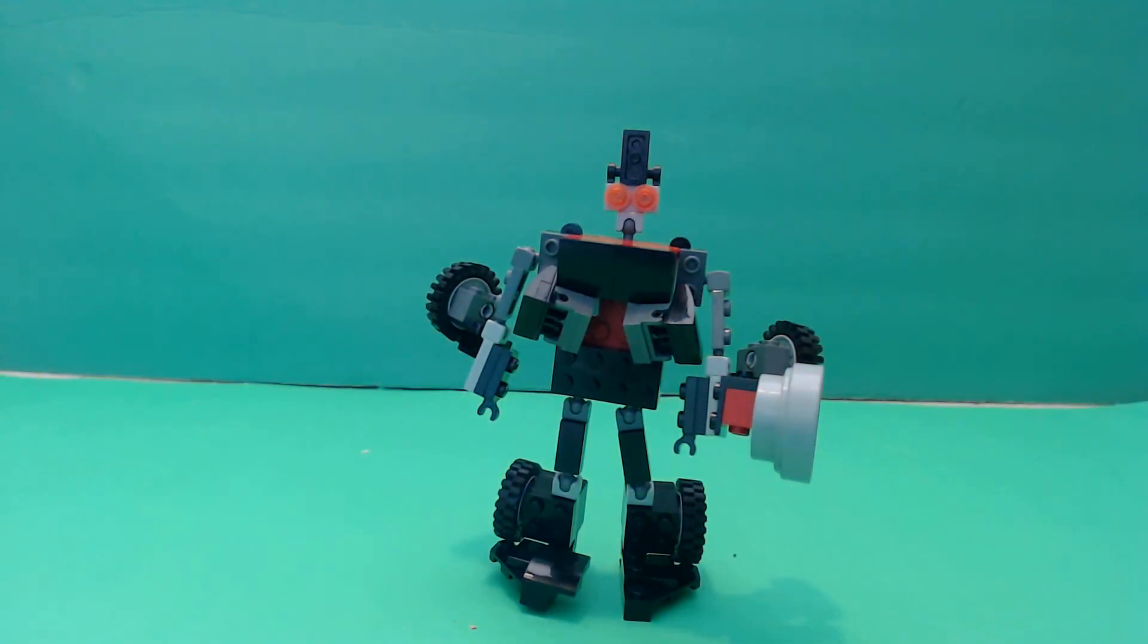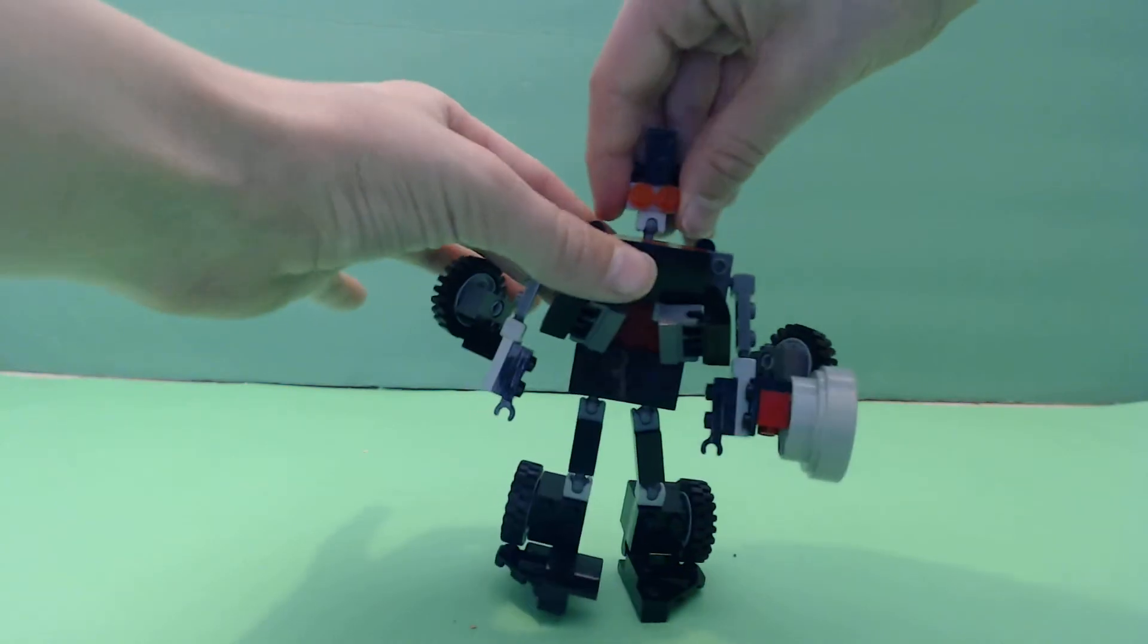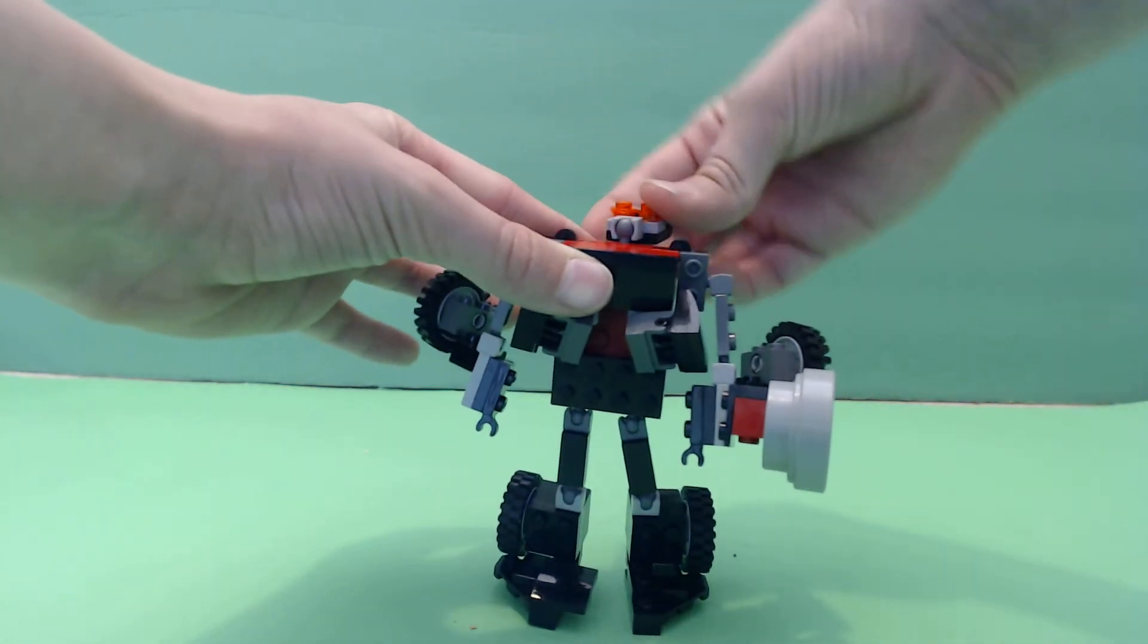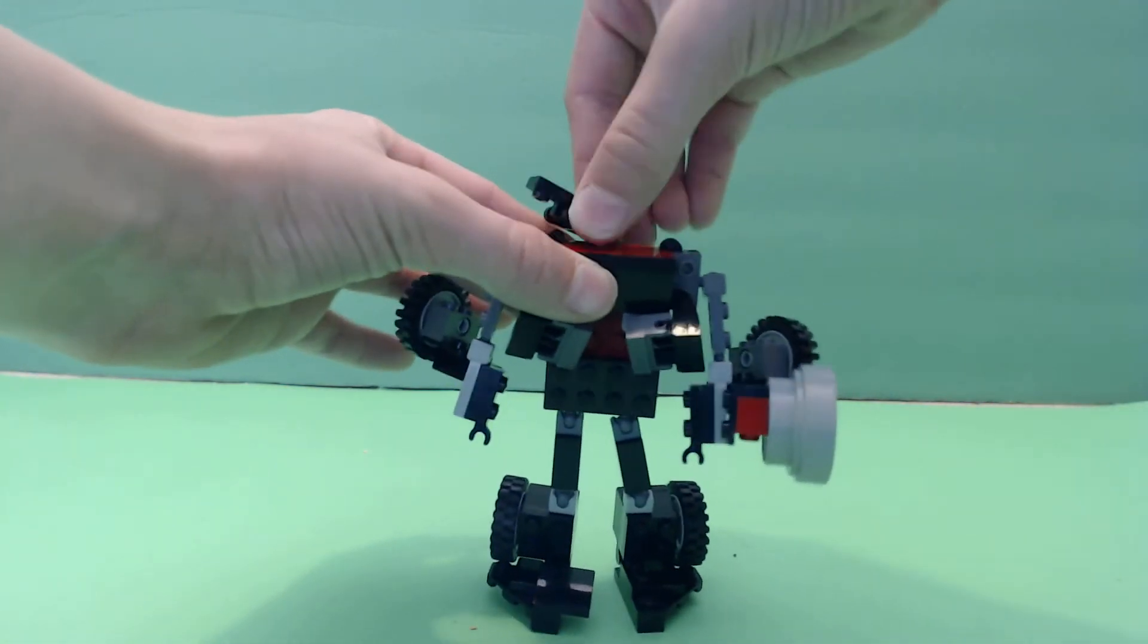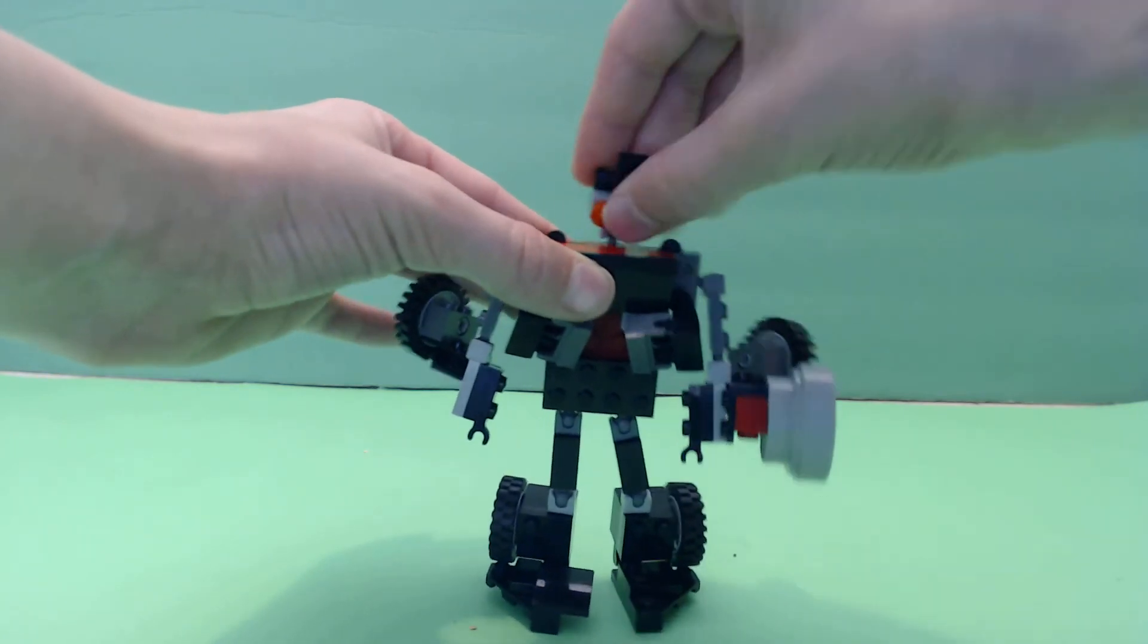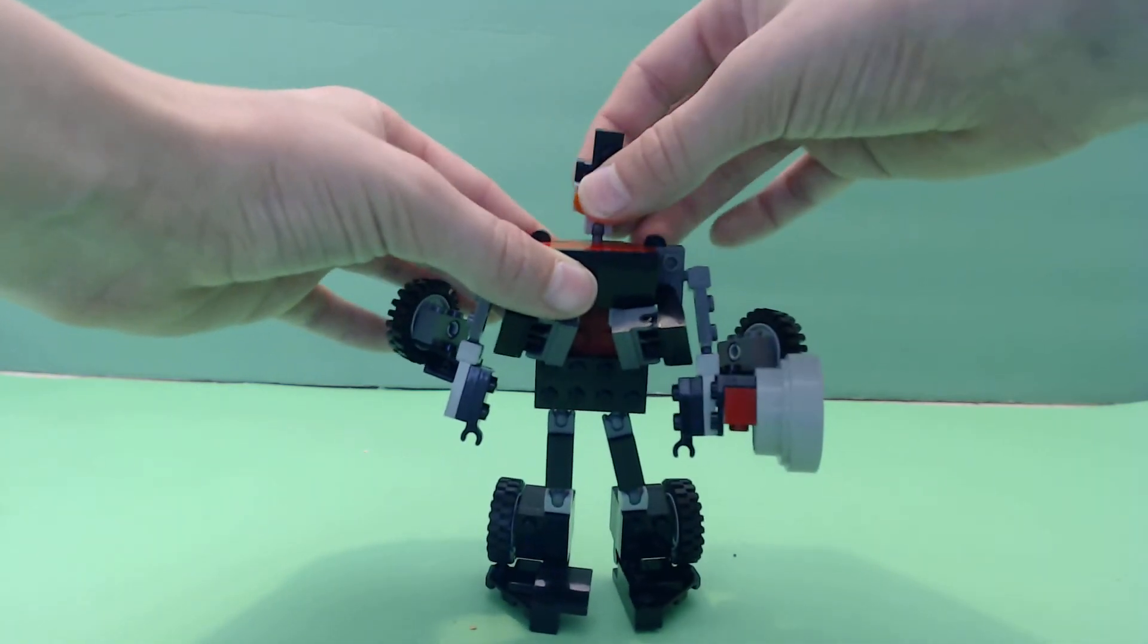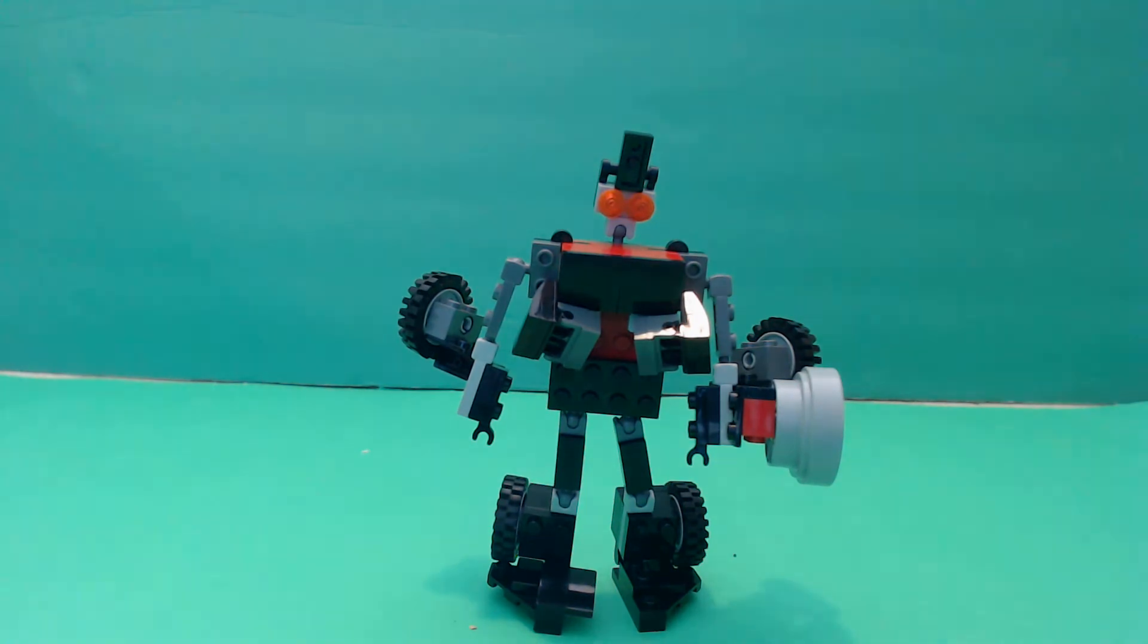And yeah, so for articulation, the head can move side to side, it can move back, it can rotate 360, can look down, can look up. So head's got a lot of movement.